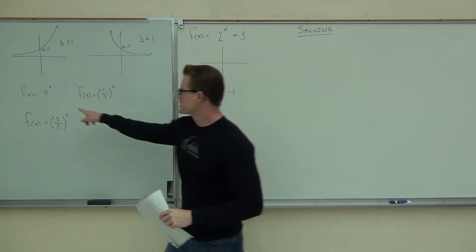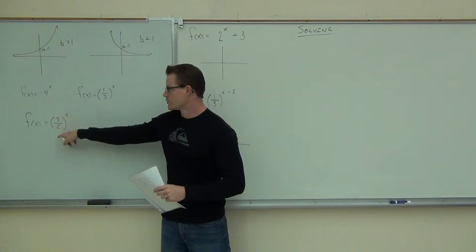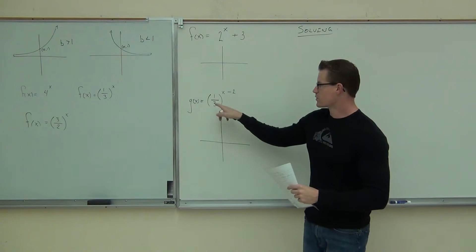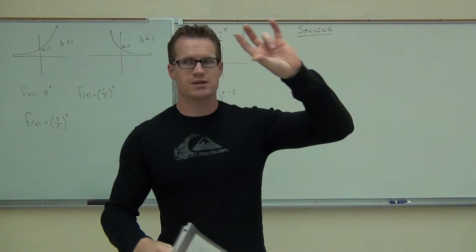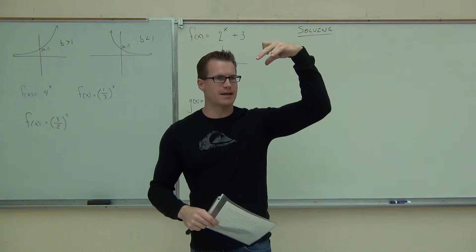So we have these things as our exponential functions, like 4 to the x, or 1/3 to the x, or 3/2 to the x, or 2 to the x plus 3, or 1/3 to the x minus 2. Those are all exponentials because we have a number base, and our exponent has a variable in it, and that's interesting.